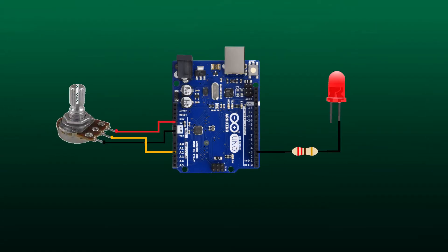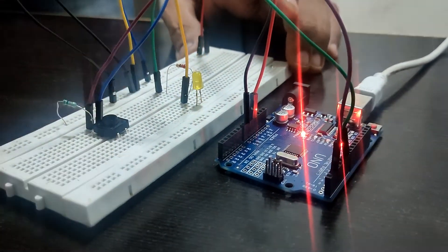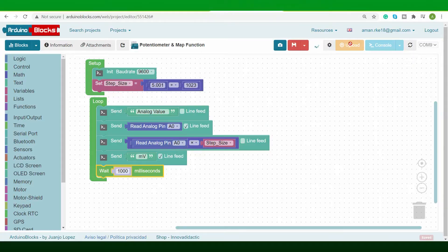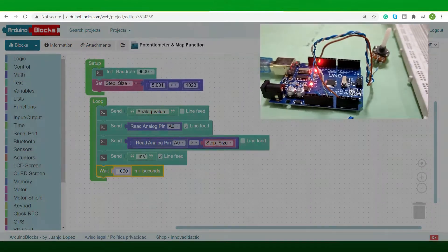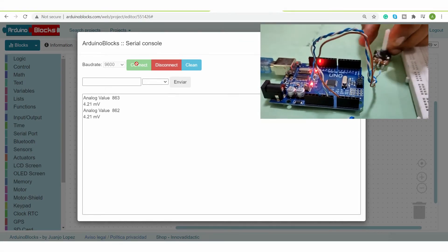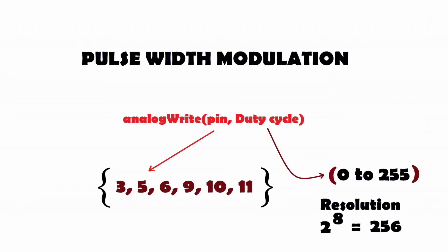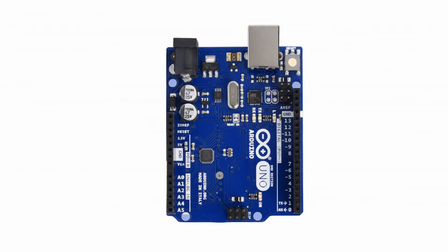Friends, this is the Cool Lab. In this video we are going to interface a potentiometer and LED and control the brightness of our LED. Till now we have discussed how to turn on and off an LED using a digital signal and how to interface a potentiometer and read an analog signal, which we demonstrated using the serial monitor in our previous video. Today we'll demonstrate how to control LED brightness using analog output, and we'll also see how pulse width modulation works in Arduino boards.